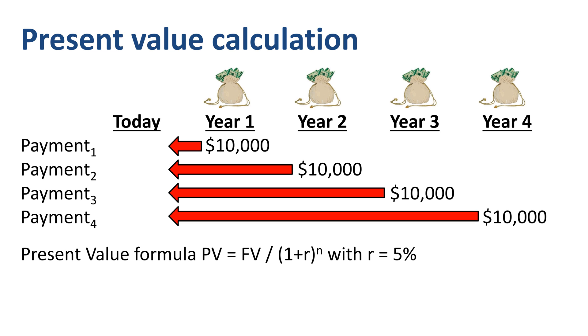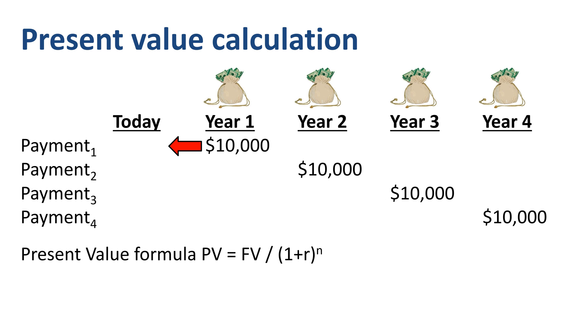Present value for each payment equals future value divided by 1 plus R to the power N. The present value of the first payment is $10,000 divided by 1.05, which is $9,524.